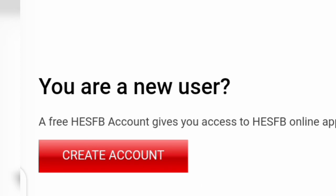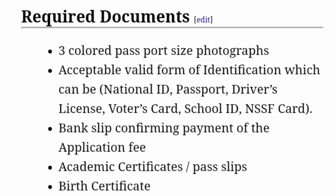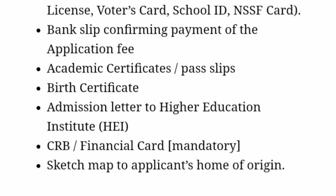Read the recommendations and take them to the responsible people. Then pay and submit the application to the nearest Centenary Bank. After doing all that, leave the rest to the Higher Education Students Financing Board, which will do the selection and communicate to only successful applicants. You will need the following documents: three passport size photographs, a valid ID (national ID, passport, driver's license, voter's card, school ID, or NSSF card), a bank slip confirming payment of the application fee, academic certificate or pass slip, birth certificate, admission letter, a formal admission letter from your institution, a NIRA or financial card, and a sketch map to the applicant's home of origin.